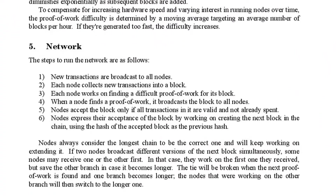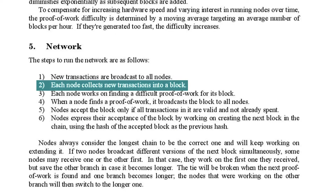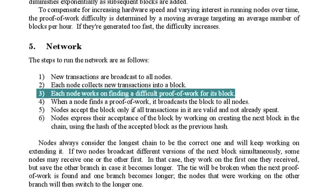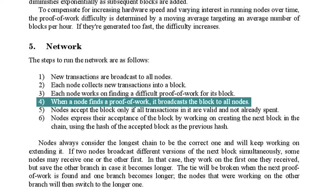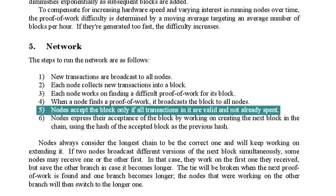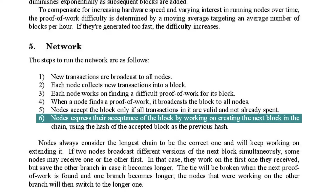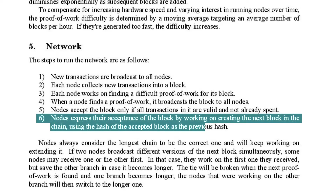We find these instructions in Chapter 5. It is these instructions that outline the core activities a node must perform to validly participate in the network. New transactions are broadcast to all nodes. Each node collects new transactions into a block. They then work on finding a difficult proof of work for this block. When a node finds a proof of work, it broadcasts that block to all nodes. Nodes accept that block only if all transactions in it are valid and not already spent. Nodes express their acceptance by working on creating the next block in the chain using the hash of the accepted block as the previous hash.